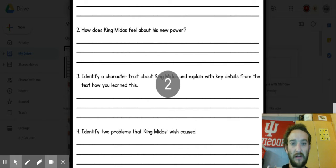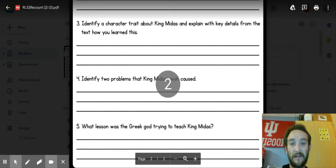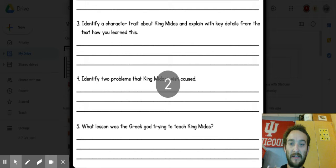Number three, identify a character trait about King Midas and explain key details from the text how you learned this. So you might say King Midas was, and then for that one it might be better to have a second sentence where you explain, where you tell me the details. You might say in the text I saw, in the text it said, so that one's probably going to be best if you have two sentences. Just making sure you're restating.